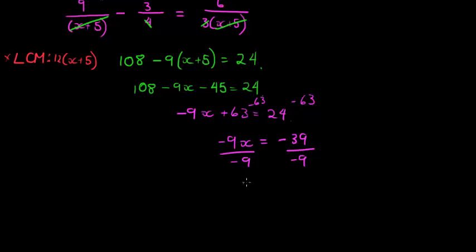And that would give me, as a reduced fraction - always try giving your answers as a reduced fraction. This is 3 times 13 and this is 3 times 3, so 3 cancels, giving me 13 over 3. And that's my final answer.